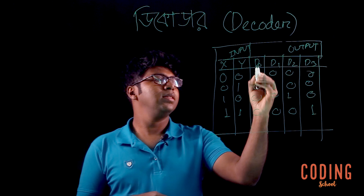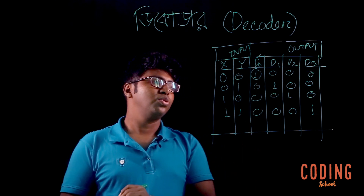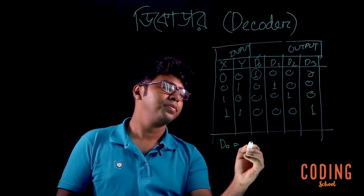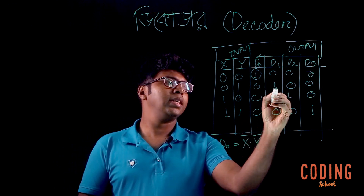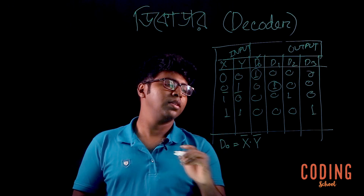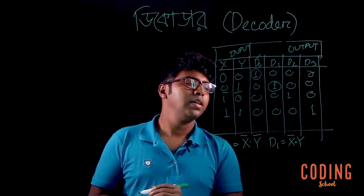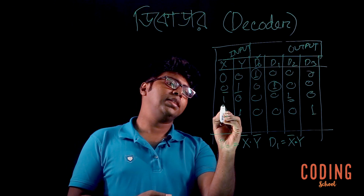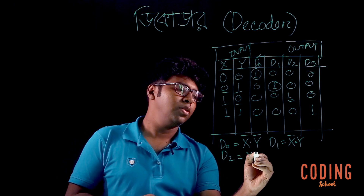Now we need to derive the expressions. D0 equals x' and y'. D1 equals x' and y. D2 should be x and y prime.